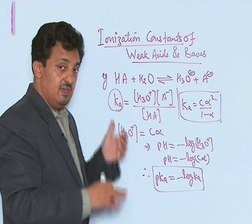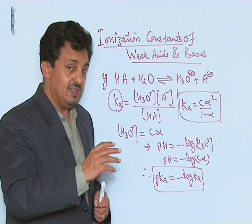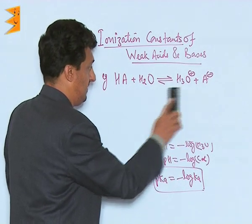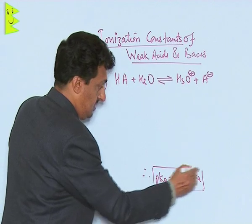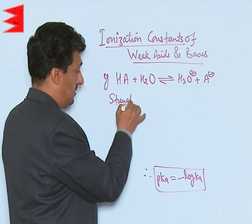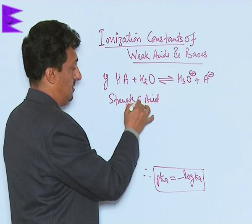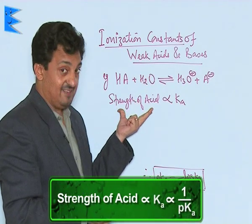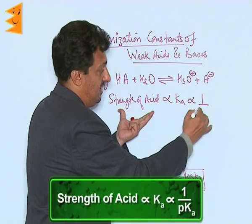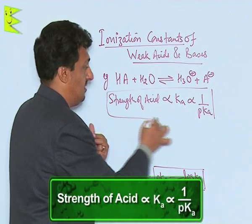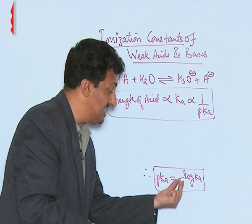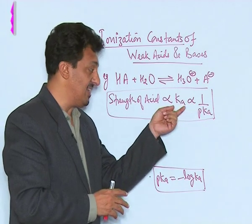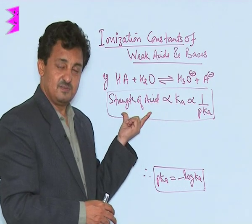If we are using the term pKa — the power of Ka — instead of Ka, then the meanings will be exactly the opposite. The strength of an acid is directly proportional to Ka: higher the value of Ka, stronger the acid. But it is inversely proportional to pKa, because pKa is the negative log of Ka. Since it is a negative term, smaller the value of pKa, larger is your Ka and stronger is your acid, and vice versa.